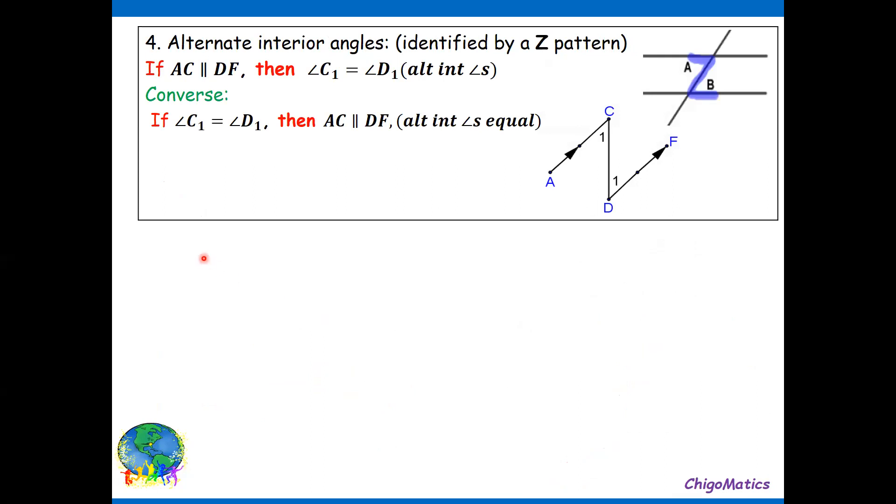The other one is alternate interior angles identified by a Z pattern. This is the Z whereby angle A is equal to angle B. Therefore, if AC is parallel to DF, then you can conclude that angle C1 is equal to angle D1.